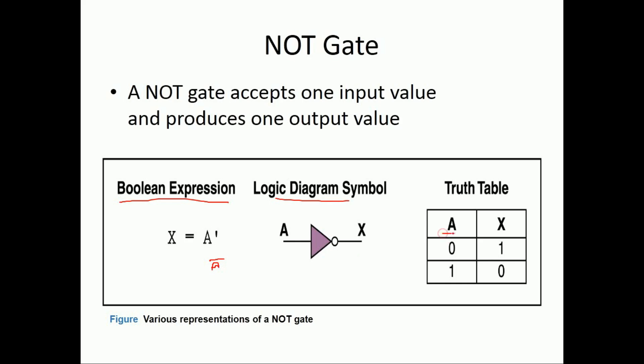NOT gate is also known as an inverter, which inverts the input signal. Since there is only one input, the number of combinations is given by 2 raised to the power of N, where N is the number of inputs. So 2 raised to power of 1 equals 2 — meaning only two combinations: 0 and 1. When input is 0, output is 1. When input is 1, output is 0.